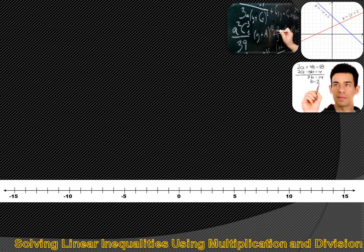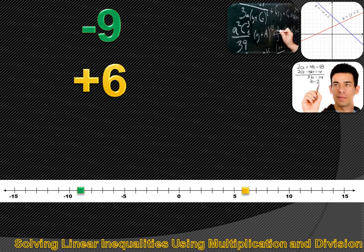Let's look at this concept of multiplying or dividing by negative numbers on a number line to make graphic sense. Graphing minus 9 and 6, you can see that minus 9 is much further to the left than plus 6, so minus 9 is a smaller number. What if we subtract 1 from both minus 9 and plus 6? The rule is that if we add or subtract any number from both sides of an inequality, the inequality remains exactly the same — minus 9 would still be smaller than plus 6.